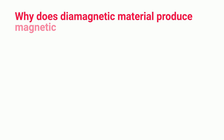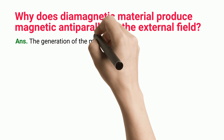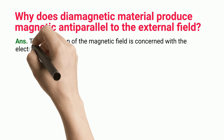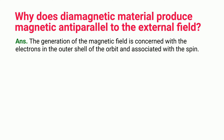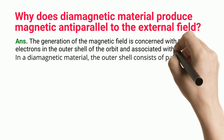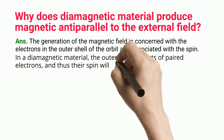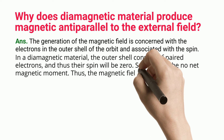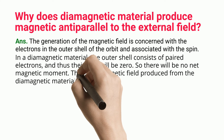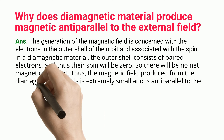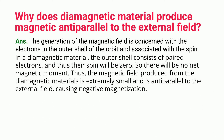Why does diamagnetic material produce a magnetic field anti-parallel to the external field? The generation of the magnetic field is concerned with the electrons in the outer shell of the orbit and associated with the spin. In a diamagnetic material, the outer shell consists of paired electrons, and thus their spin will be zero. So there will be no net magnetic moment. Thus, the magnetic field produced from diamagnetic materials is extremely small and is anti-parallel to the external field, causing negative magnetization.